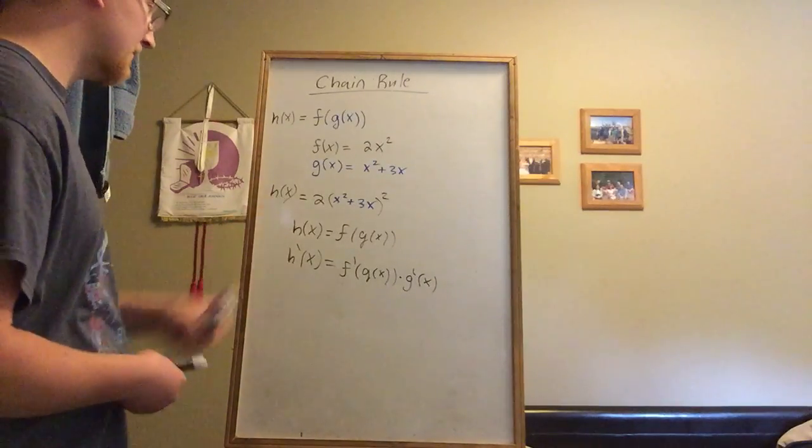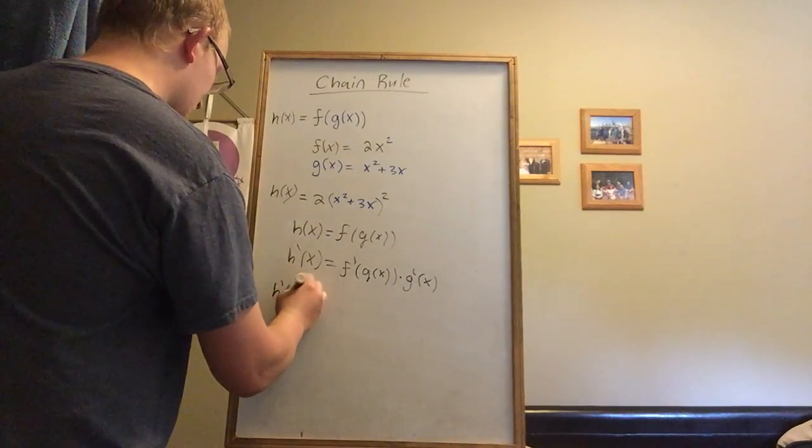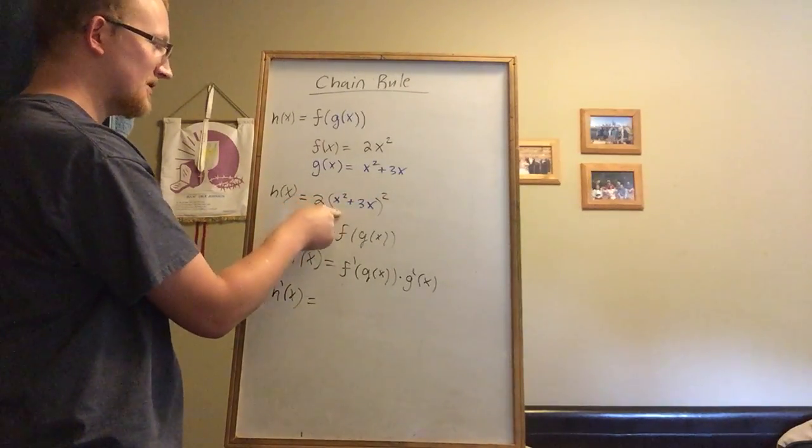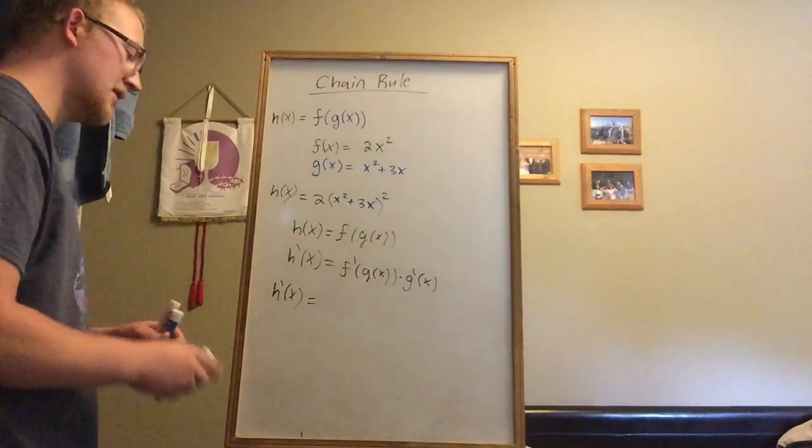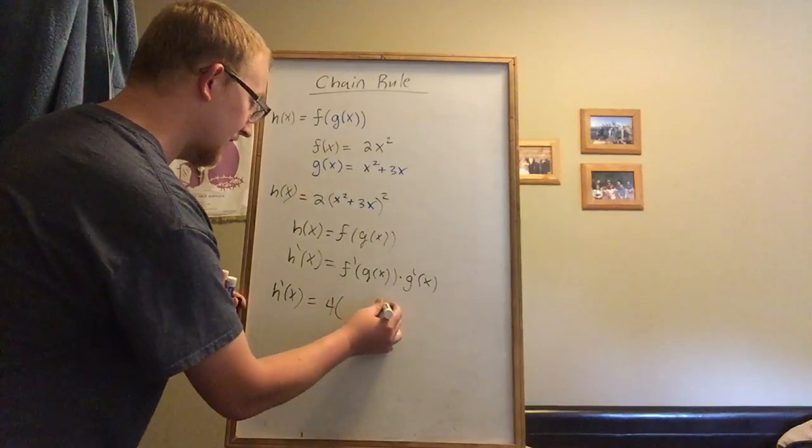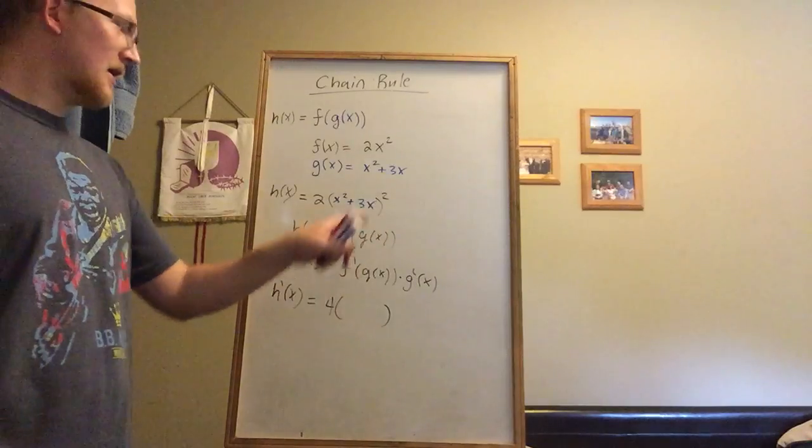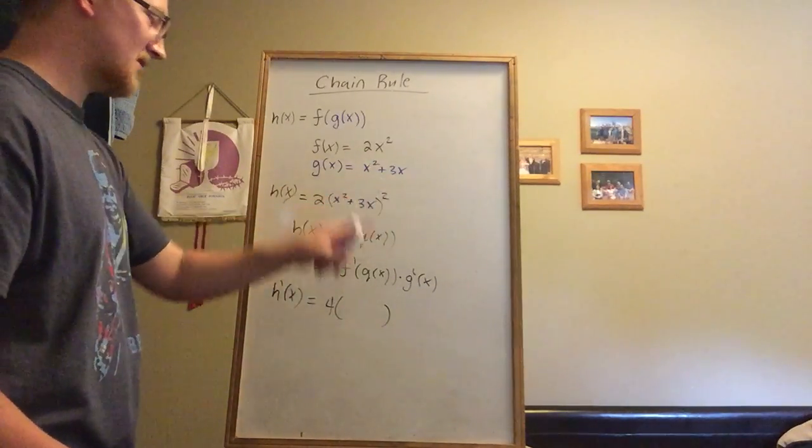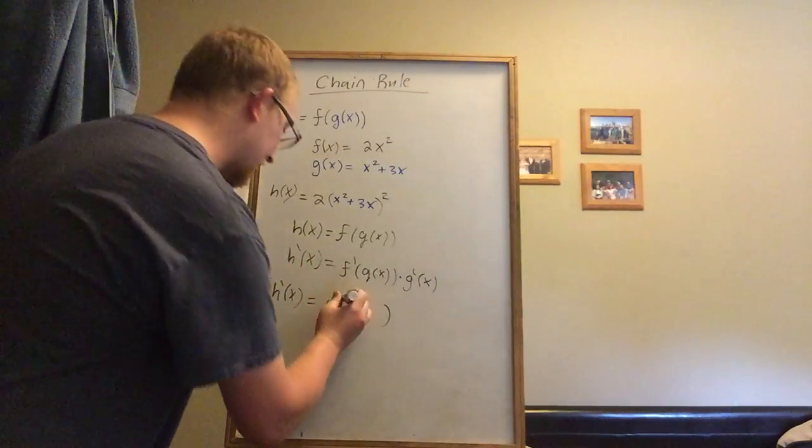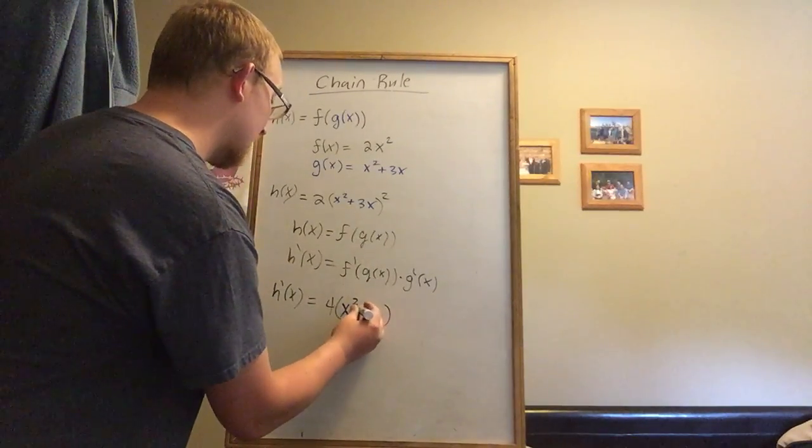For example, to find h'(x) for this example, I'm going to apply the power rule for the outer function. The outer function is 2(something)². I pull down the 2 and multiply by the constant up front, which gives me 4. Because I applied the power rule, I subtract 1 from the power. So 2 minus 1 is 1, this whole thing is to the first power. We still have the inner function g(x) within, so that's x² + 3x.